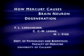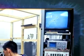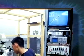How Mercury Causes Brain Neuron Degeneration. Mercury has long been known to be a potent neurotoxic substance, whether it is inhaled or consumed in the diet as a food contaminant.